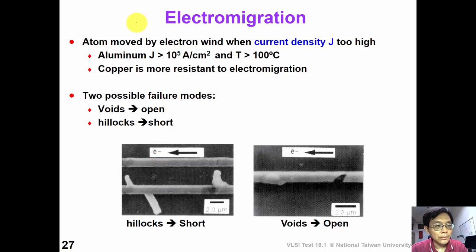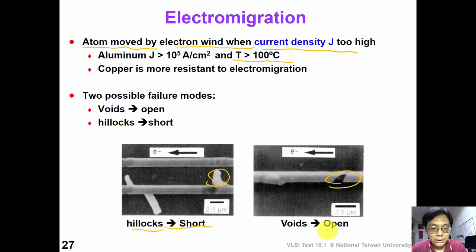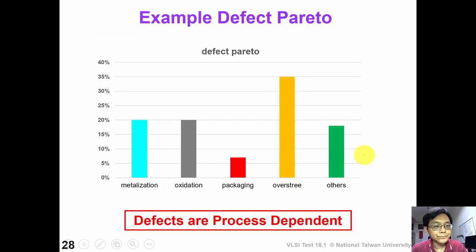For electromigration, the failure mechanism is caused by atoms moved by electron wind when the current density is too high and the temperature is very high. The atoms actually move to form hillocks or voids. Hillocks can cause shorts and voids can result in opens.